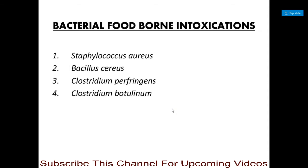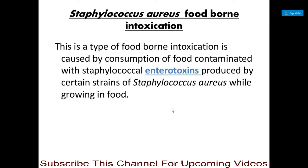Let's start with bacterial foodborne intoxications. There are different types of bacteria responsible for the production of toxins in food, and these include Staphylococcus aureus, Bacillus cereus, Clostridium perfringens, and Clostridium botulinum. We will see each one by one, starting with Staphylococcus aureus foodborne intoxication.